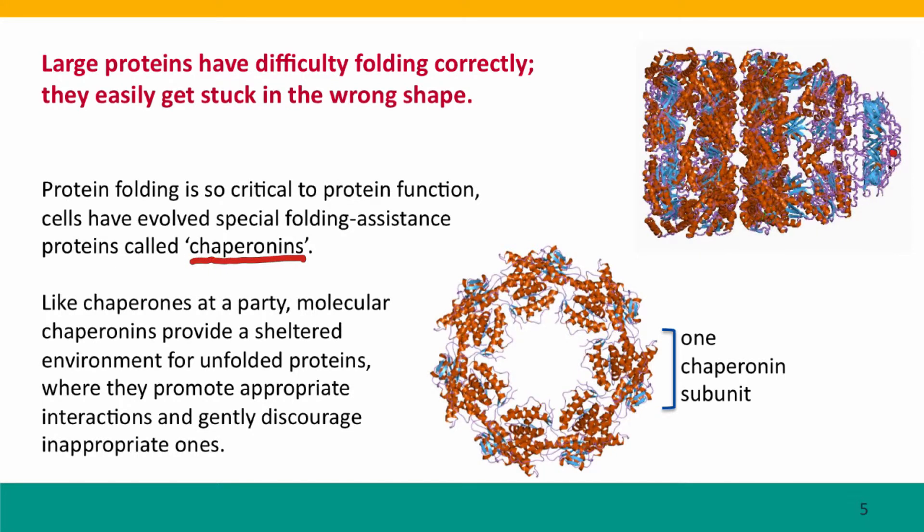Here's an example of a chaperonin complex. It's actually made of many chaperonin subunits. Here's what it looks like seen from the end. It's sort of a hollow bag in which proteins, young, new proteins that haven't yet achieved their mature structure, have a sheltered environment where they can explore interactions while the chaperone, it's really like a chaperone at a party, the chaperone proteins sort of promote appropriate interactions and gently discourage inappropriate interactions.